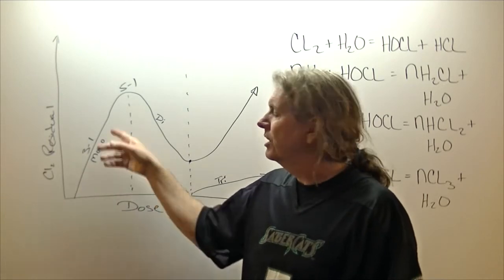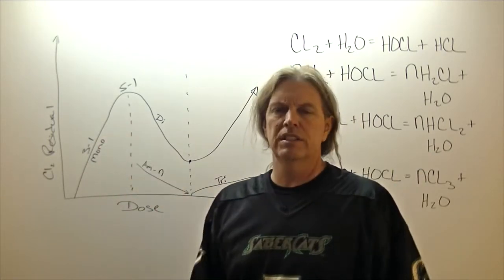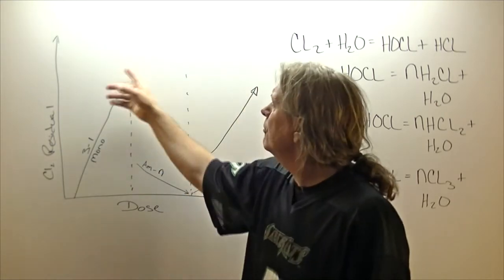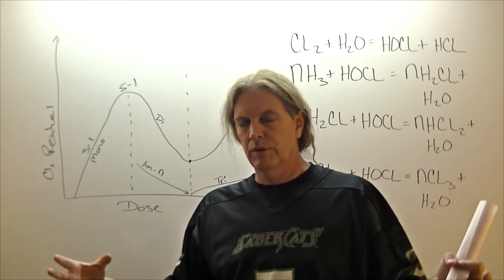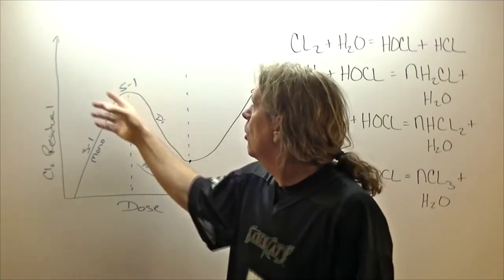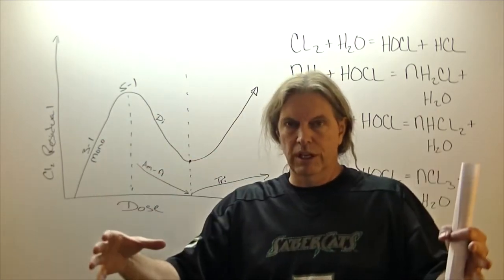So that's why three to one is a good thing. Why is three to one not a perfect thing? Well, the excess ammonia nitrogen floating around the system can also cause nitrification issues. At five to one, you have less excess ammonia nitrogen floating around for nitrification, but you don't give yourself that cushion if you have a low residual out in the system.